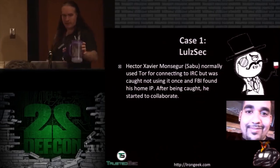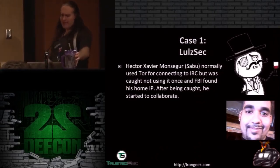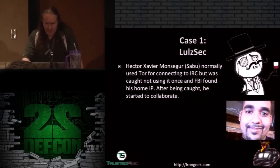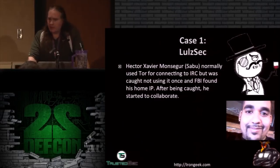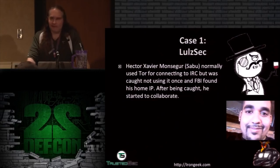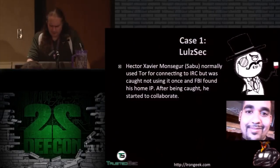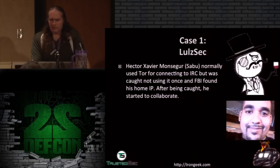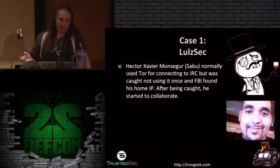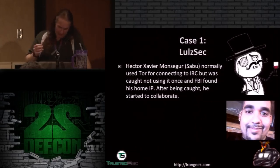Next case: Hector Xavier Monsegur — I'll call him Sabu. Normally he used Tor to connect to IRC, so they wouldn't know his home IP. But one time he got lazy and didn't connect through Tor, so he got caught and started to collaborate — he really didn't want to go to jail. He didn't use Tor consistently, and eventually they found him. People doing illegal acts should use something like I2P which has IRC built in so everything goes over an anonymous network, because even IRC cloaking doesn't help if the IRC server operator can see your real IP.